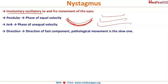The direction of nystagmus is given by the direction of the fast component. If the fast component is towards the right, we call it right-sided nystagmus. However, the pathology lies on the slower side — so in right-sided nystagmus the pathology is on the left side.